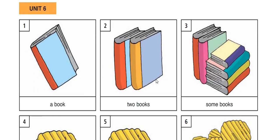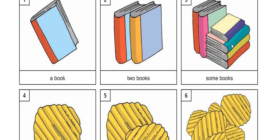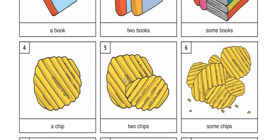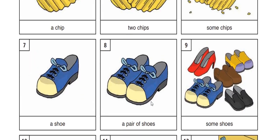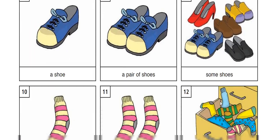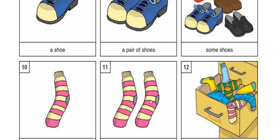A book, two books, some books. For a single book you use 'a book.' A pair means two. More than two, you use 'some books.' A chip, two chips, some chips. A shoe, a pair of shoes, some shoes. A pair of shoes, some socks. These are things we use the word 'pair' for.